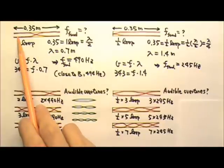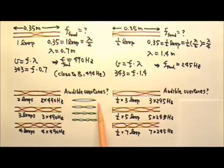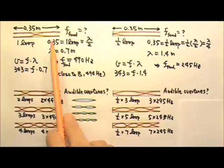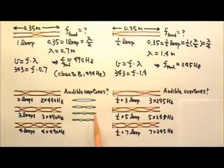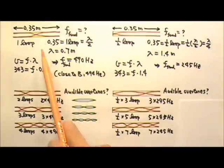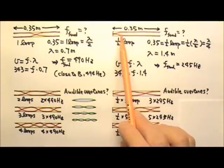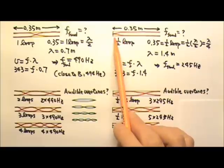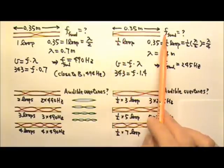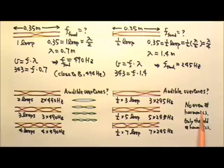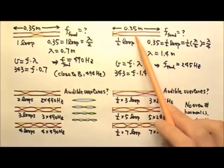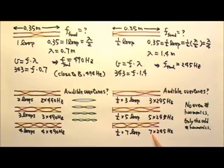An organ pipe that is open at both ends and a string fixed at both ends are both symmetric on the two sides, and we can hear all of the harmonics — first, second, third, fourth, et cetera. An organ pipe that is closed at one end is not symmetric on the two sides, and the even number harmonics are not audible. Only the odd number harmonics are audible — the first, third, fifth, seventh, et cetera.